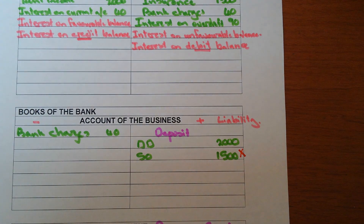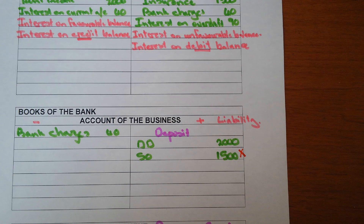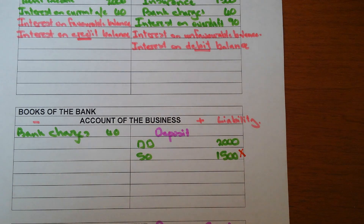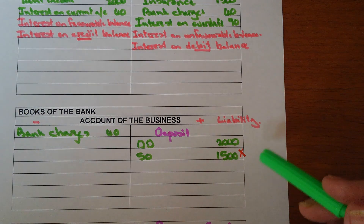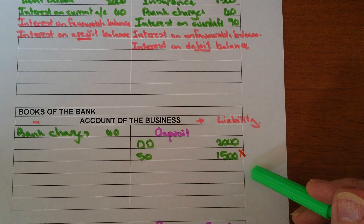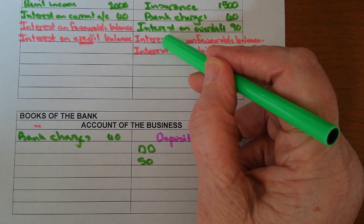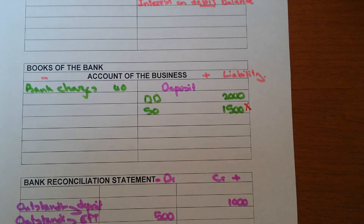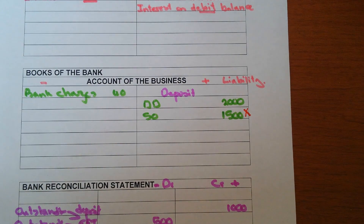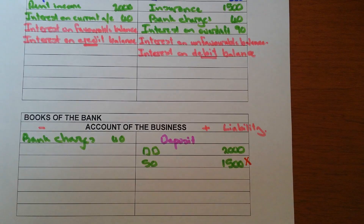In one exercise you can have both interest on unfavorable balance and interest on favorable balance. The reason is that at the end of the month the business pays expenses, salaries, and creditors, creating an unfavorable balance. Then as customers pay their debts over the next week or ten days, the balance changes to favorable — meaning you can earn interest on a favorable balance and pay interest on an unfavorable one.